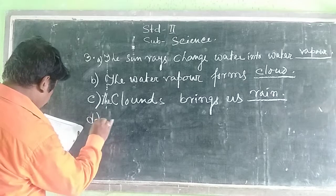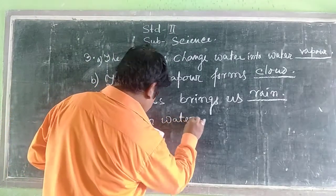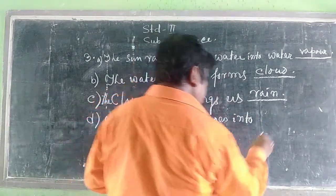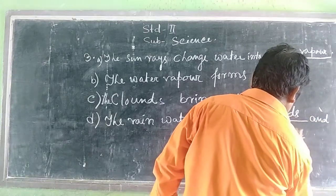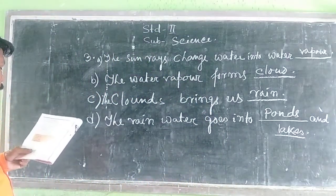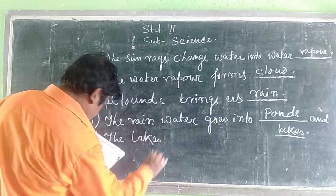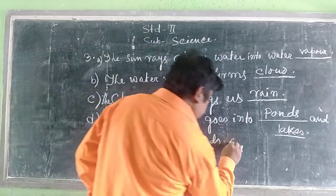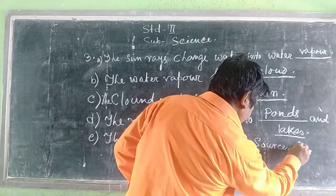Number D: The rain water goes into lakes and pools.